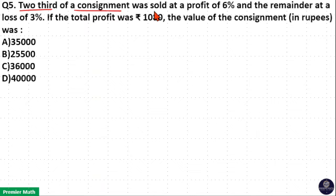Two-third of a consignment was sold at a profit of 6% and the remainder at a loss of 3%. If the total profit was 1080, the value of consignment in rupees was.